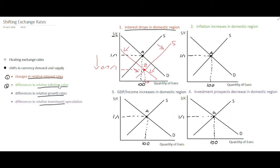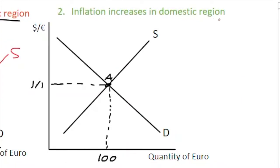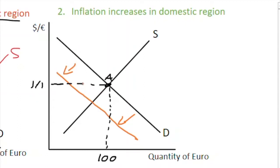In example two, we look at differences in relative inflation rates. Inflation is increasing in the domestic region — the euro area. If inflation increases in the euro area, it becomes less competitive, and this impacts exports. Our exports become more expensive, so the demand for euros decreases because US consumers are buying fewer European exports. If they're buying less of our exports, they demand less of the euro currency to purchase them, so the demand curve shifts to the left.